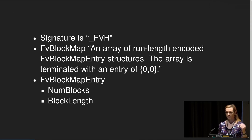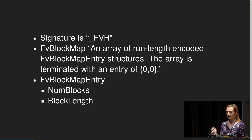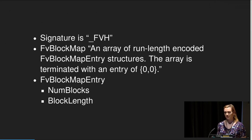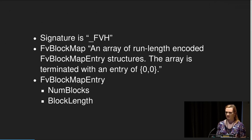What you also want to look at is the '_FVH' signature — that's the EFI volume signature. Looking at the volume header, the last two entries are the block map and the entry map. The block map is an array of run-length encoded entries terminated by an entry of zero and zero. The entry map gives you the number of blocks and the length of each block, so you can know how big your volume is and extract your information from it. You can read regions the same way.